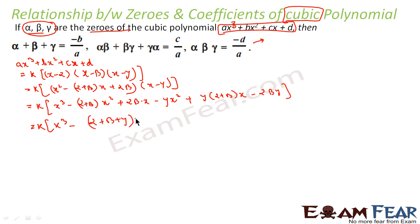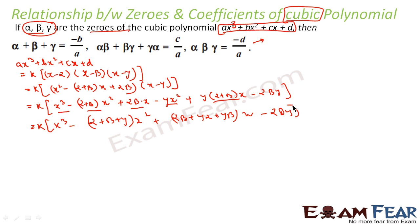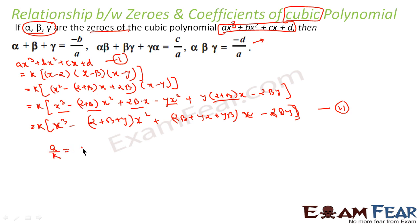Grouping the coefficients: the x² term gives −(alpha + beta + gamma), the x term gives (alpha·beta + beta·gamma + gamma·alpha), and the constant term gives −alpha·beta·gamma. So comparing the two forms, if we compare the x³ terms we get a/k, and comparing the x² terms we get b = k·(−(alpha + beta + gamma)).